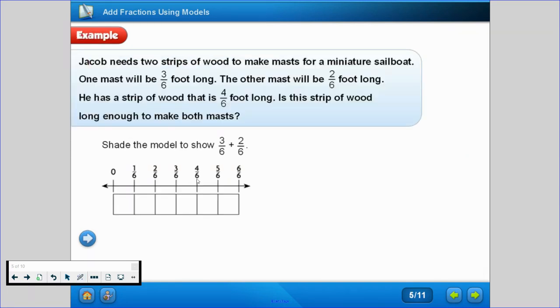Let's look at another problem. Jacob needs two strips of wood to make masts for a miniature sailboat. One mast will be 3/6 foot long, the other mast will be 2/6 foot long. He has a strip of wood that is 4/6 foot long. Is this strip of wood long enough to make both masts? Let's shade the model and find out.